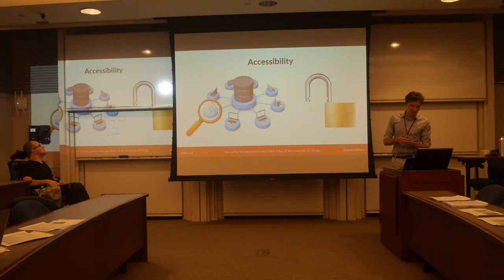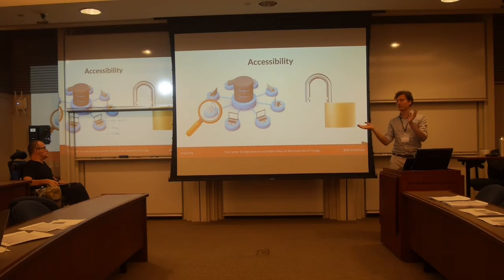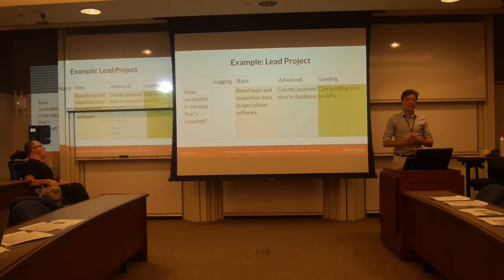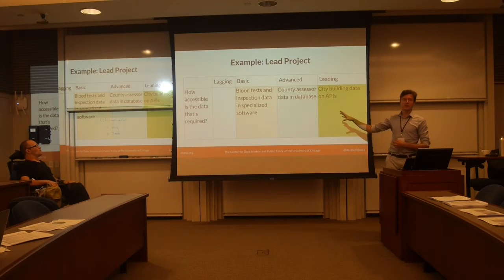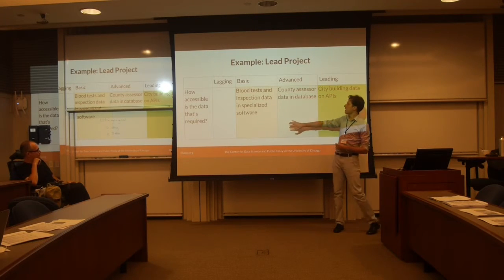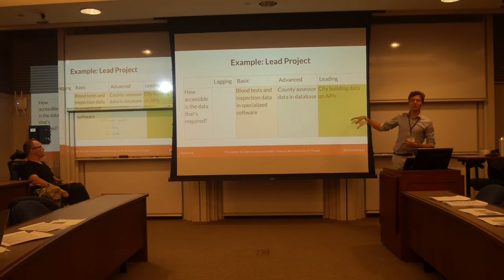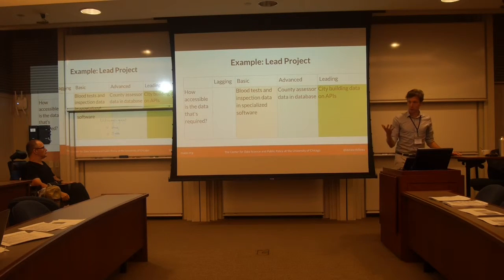Accessibility is another dimension. If nobody in your organization can access your data, or very few people can use it, that's low maturity. High maturity means you make it accessible through an API to everybody, sharing your data openly. In the lead project, the blood test inspection data sits in specialized places, the county assessor data is in a database that can be queried, and the city zoning data is publicly available through an API — so different grades on the same dimension within one project.